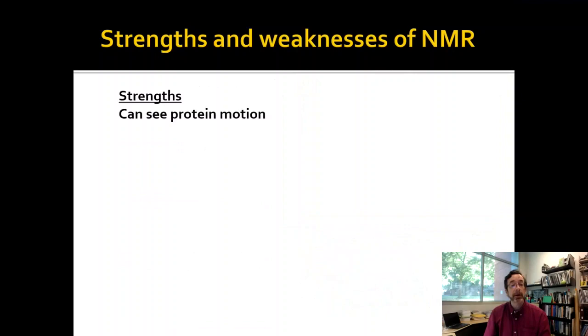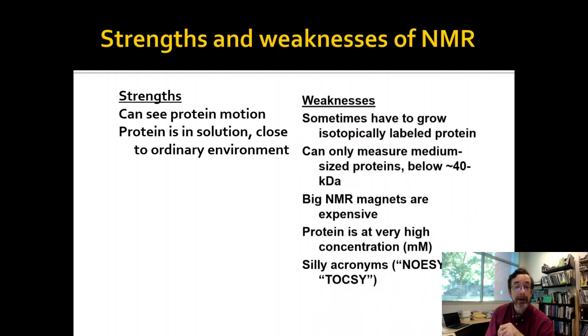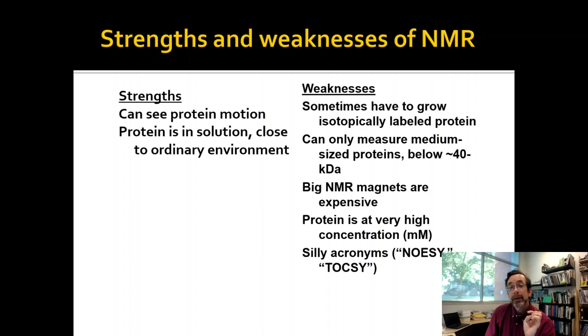So strengths and weaknesses of NMR. It can see protein motion. The protein is in solution, so it's close to the ordinary environment. And there's lots of weaknesses too. Sometimes you have to grow isotopically labeled protein, which is expensive. And this is the big thing about NMR. There doesn't appear to be a way around this for most normal scientists and normal labs. You can only measure medium-sized proteins. Above about 50 kilodaltons, NMR begins to not work anymore for technical reasons that are very hard to get around. So most NMR can only be done on medium to small proteins. The big NMR magnets are very expensive. They consume a lot of helium, which makes them more expensive now because we are having some helium shortages. And the protein's at very high concentration. So you can say it's in solution, but it's still not quite physiological environment.